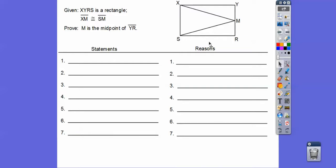So here we have a rectangle, and our goal is to prove that this is the midpoint of this side. What I'm going to do is get this triangle congruent to this triangle, and then I can say by CPCTC that this side equals this side. And then by definition of a midpoint, this has to be the midpoint. Since it's a rectangle, I'll use the two opposite sides being congruent. This is a right angle, so we have a right triangle, and then this given is the hypotenuse. So we're going to get them congruent by the HL theorem.